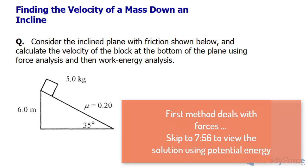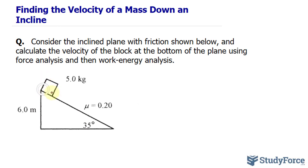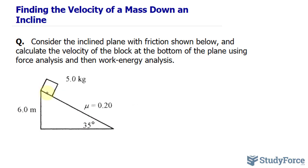Let's begin by analyzing what's happening. We have a 5 kilogram mass on an incline that has a height of 6 meters. I want to start off by creating a vector diagram. This mass is exerting a downward force due to gravity, which can be calculated using Newton's second law, where F equals mass times acceleration.